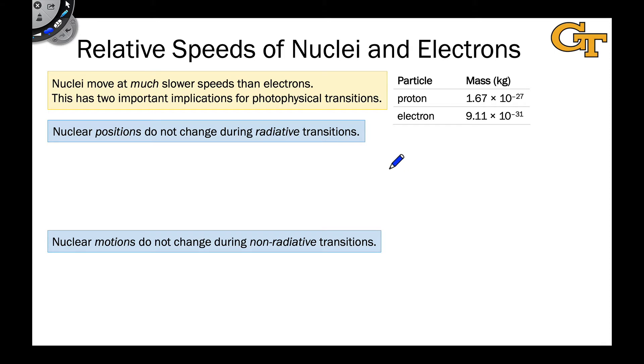particularly considering most nuclei contain more than one proton. This has two important implications for photophysical transitions. When we think about radiative transitions, radiative transitions purely involve the motion of electrons as light's electromagnetic field interacts with the negative charge of the electron.